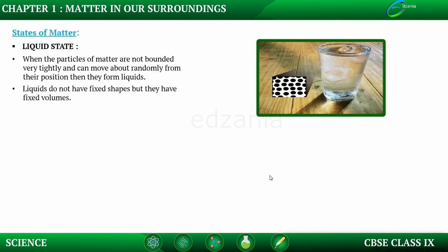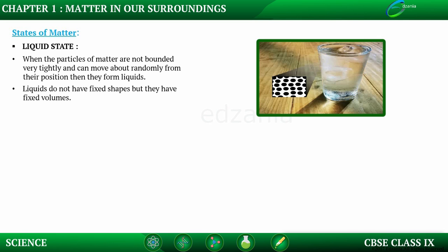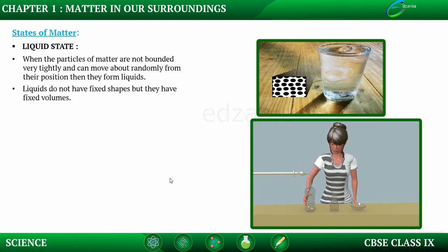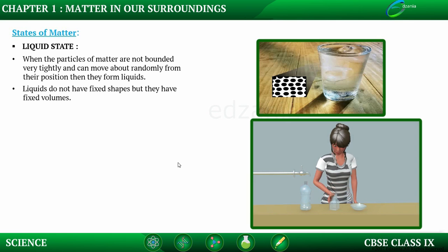Liquids do not have fixed shapes, but they have fixed volumes. That is, liquids take the shape of the container in which they are kept. For example, liquid filled in a bottle takes the shape of the bottle; when poured in a glass, it takes the shape of the glass; and when poured in a bowl, it takes the shape of the bowl. However, the amount of space occupied by the liquid remains fixed.